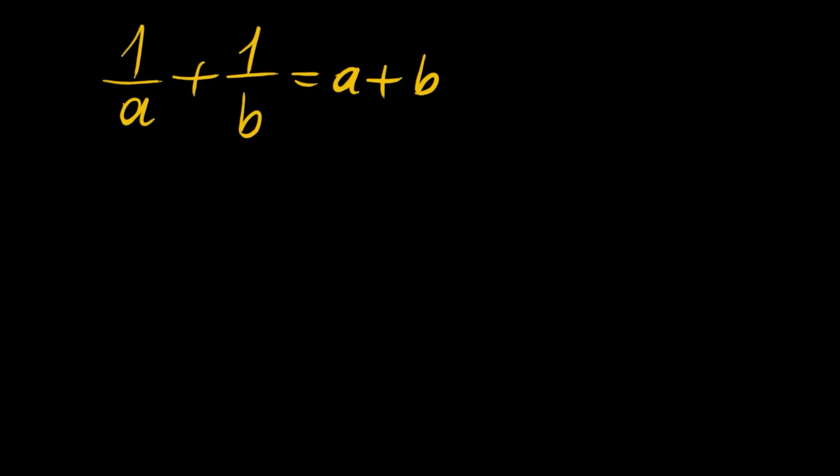Hello everyone, welcome to the channel. Today we're gonna solve this nice rational equation with two variables. We have 1 over a plus 1 over b is equal to a plus b. So we will solve this for a in terms of b or for b in terms of a.